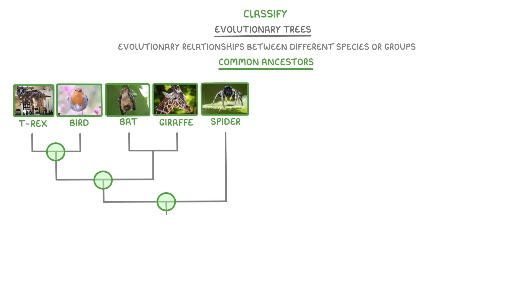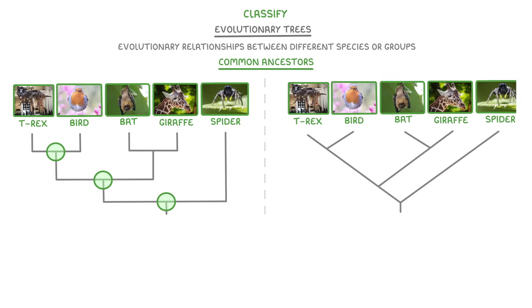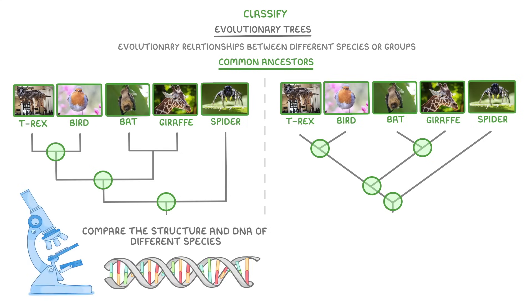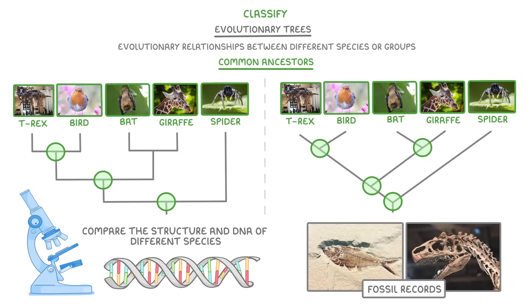Different evolutionary trees can look quite different. This here is the same information, but just in a different form. The main thing to remember is that whenever a line splits in two, it's because a common ancestor is splitting into two different species. In order to learn all of these relationships in the first place, scientists had to compare the structure and DNA of different species, looking not only at living species around today, but also at the fossil records.